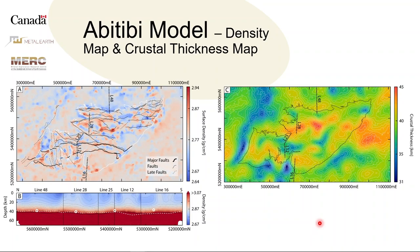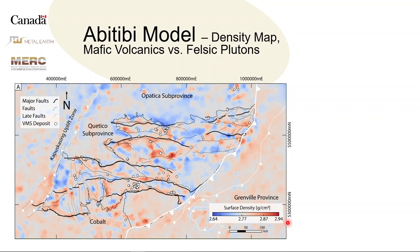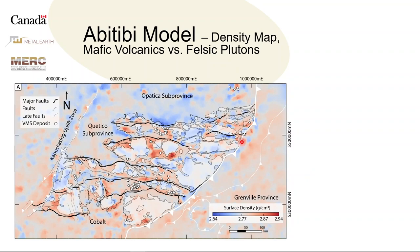Starting off by looking at just the density map. Nothing too groundbreaking here. The main distinction is that, as you'd expect, the mafic rocks are denser and the felsic plutons are less dense. I've drawn on the different types of faults and structures, and the dots are VMS deposits. There's no real correlation between VMS occurrence and surface density, other than the fact that VMS form in the mafic volcanics, as you'd expect. The felsic pluton outlines line up with those density lows.